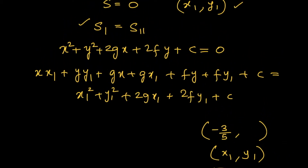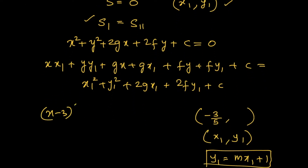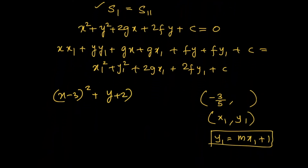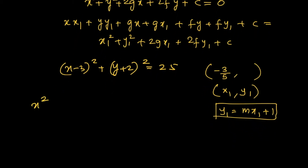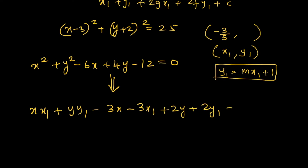Let's write the equation. The circle is (x − 3)² + (y + 2)² = 25, which expands to x² + y² − 6x + 4y − 12 = 0. Now writing the chord equation whose midpoint is (x₁, y₁): x·x₁ + y·y₁ − 3(x + x₁) + 2(y + y₁) − 12 = x₁² + y₁² − 6x₁ + 4y₁ − 12.